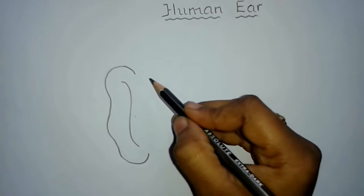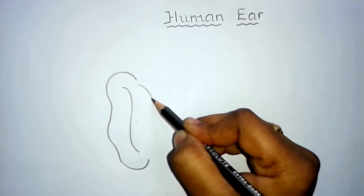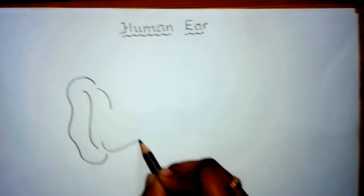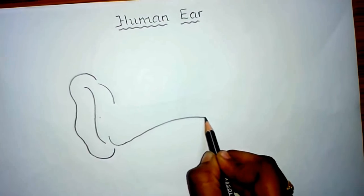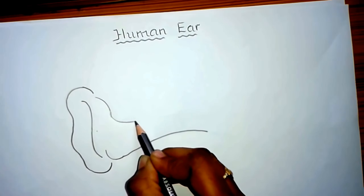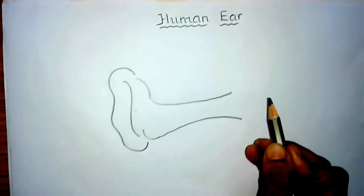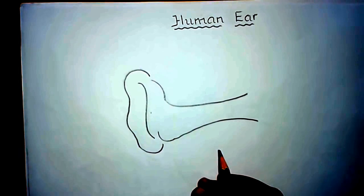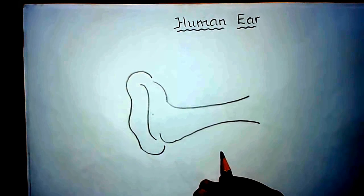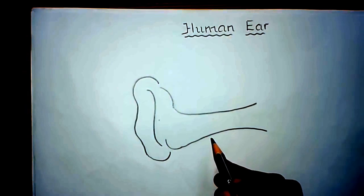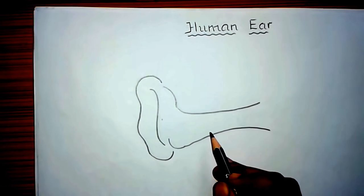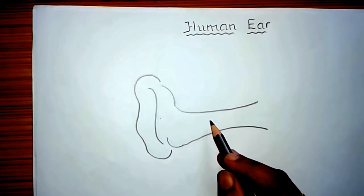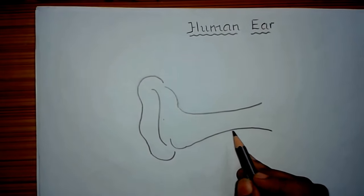Now draw the auditory canal. Just make a curved line like this. This is the auditory canal. The hairs present in the auditory canal prevent dust particles from entering, and wax which is produced in the auditory canal entangles small organisms and dust.